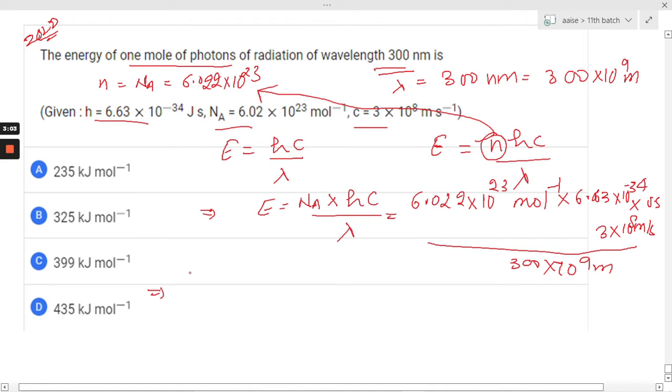Further, when we are going to simplify it: 6.022 into 10 raised to 23 per mole, multiplied by 6.63 into 10 raised to minus 34 joule second, multiplied by 3 into 10 power 8 meter per second, whole divided by 300 into 10 with power minus 9 meter.